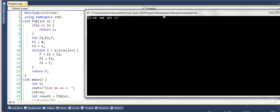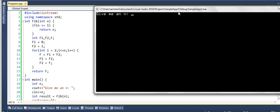This says give me an n. Let us say I give n is equal to 6 and the output is 8 which is correct. I will run this again and this time for an input 40 and this time the output is 102334155 which is a 9 digit number.